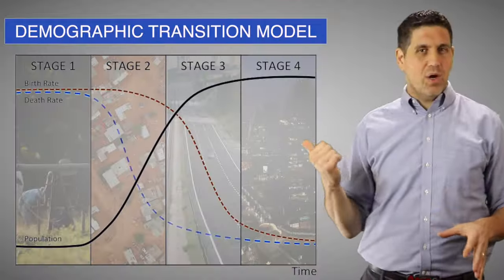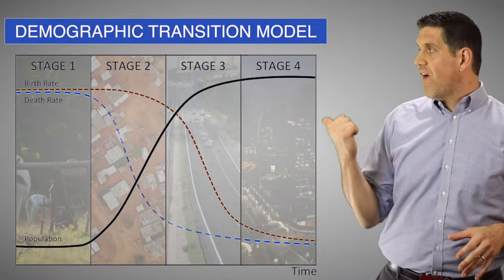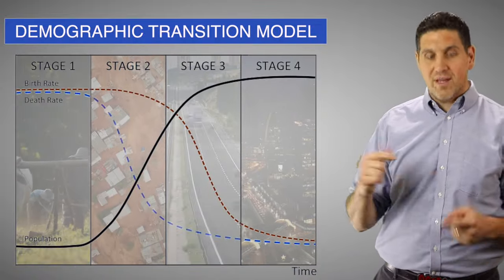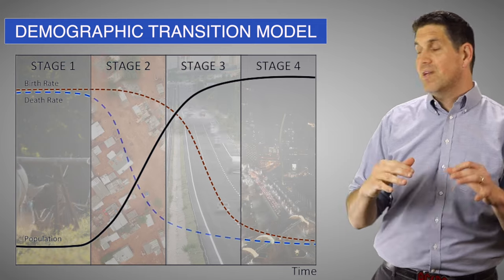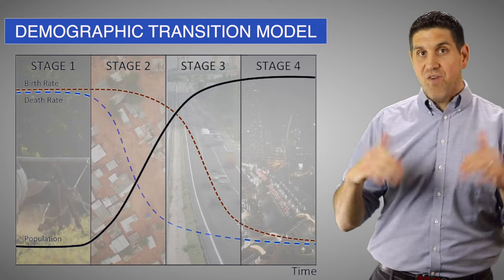And there's also a theoretical Stage 5, with countries like Germany and Japan, where the population is actually falling.